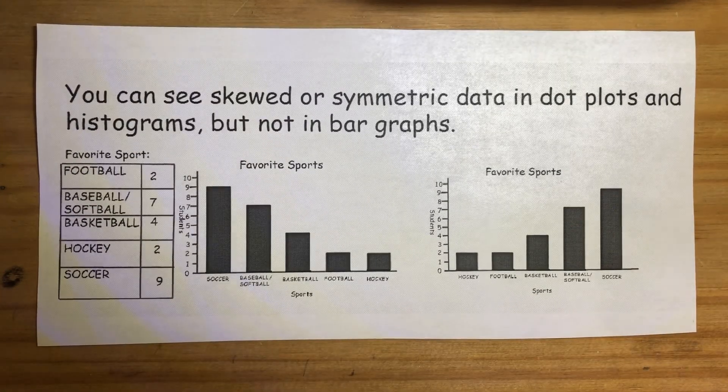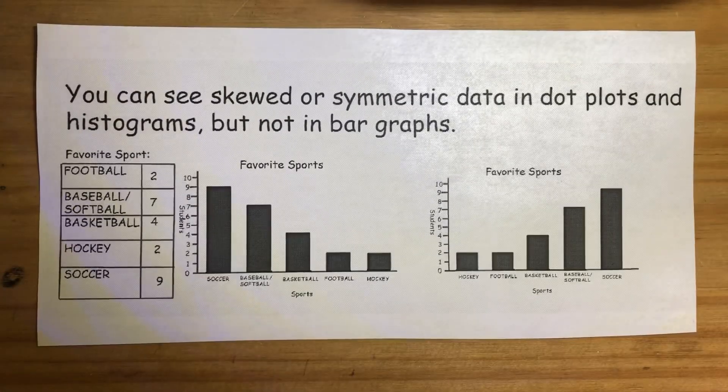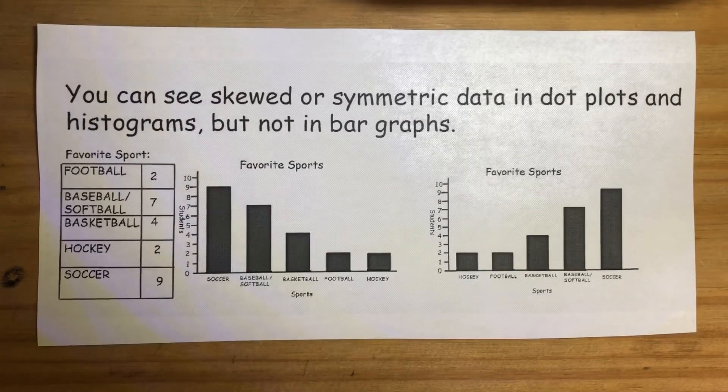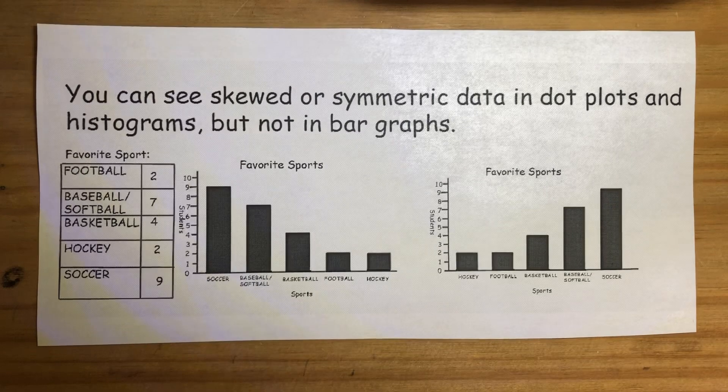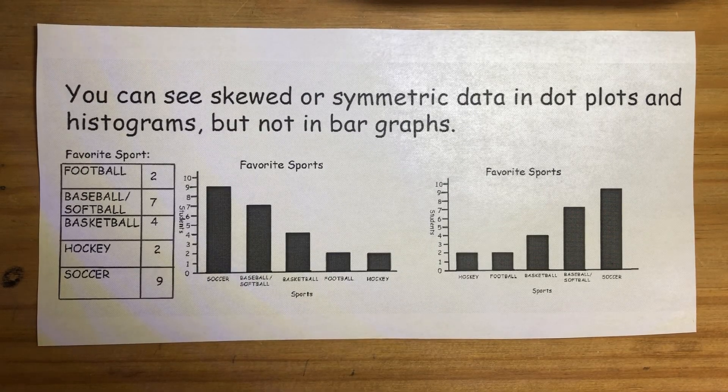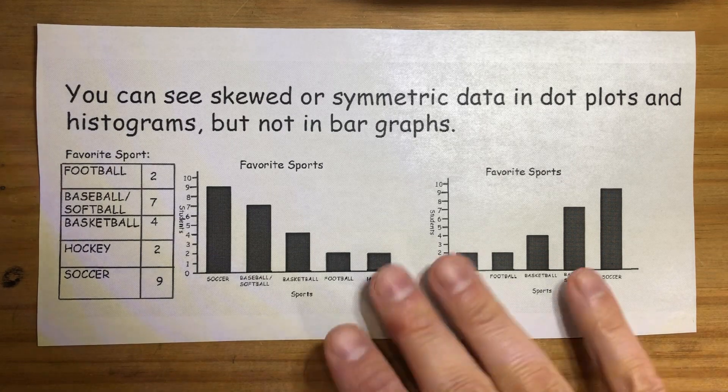The problem is, when you make a bar graph, the categories can kind of be in whatever order you want. It's not ordered like a histogram or a dot plot is. So you've got to be very, very careful not to identify data as being skewed or symmetric when dealing with a bar graph.